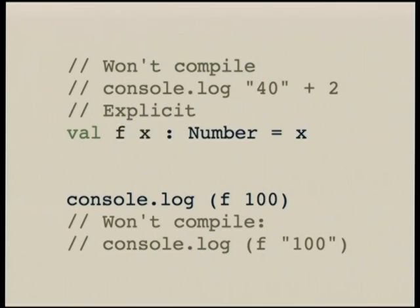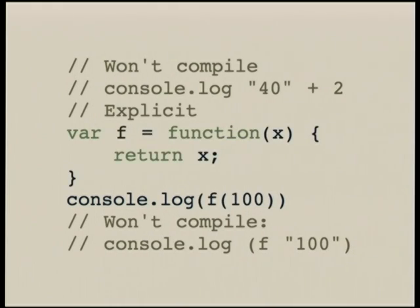So this is showing static typing. At the top, if we try and do 40 plus 2, 40 is a string. In JavaScript, that will print something. I'm not actually sure. I think it will coerce the 2 to a string. So it will be 402. Or will it do it the other way around? I don't know. But in Roy, that's not going to compile. It's not going to give you any output. And you can be explicit in your type. So this is creating a function. X is a number. So if you try and pass a string to that, it's going to fail. And that's JavaScript. So it doesn't have to put any type checks in at runtime or anything. It does it all statically.